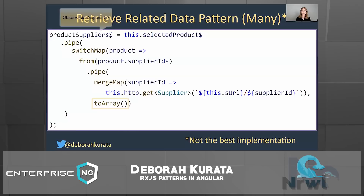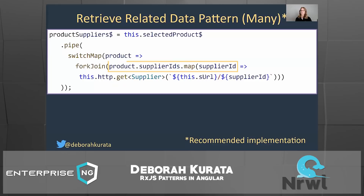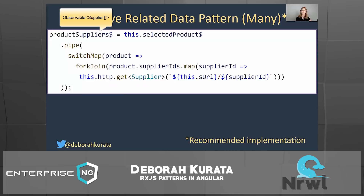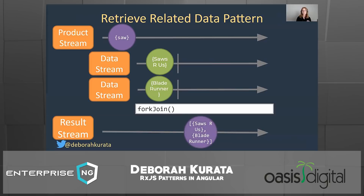A better implementation uses forkJoin. Starting with selected products, we switchMap as the user could change the product, then use forkJoin: we map over each supplier ID using array map to issue all the GET requests, and forkJoin automatically subscribes to each one, waits for all to finish, and returns the results as an array. Hovering over productSuppliers$ confirms we're returning the right type. When the user picks a product, it gets the associated suppliers; forkJoin waits until it has all of them before returning the value.